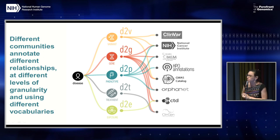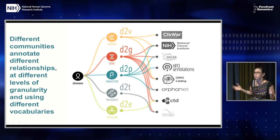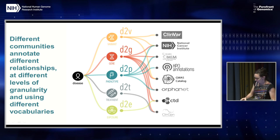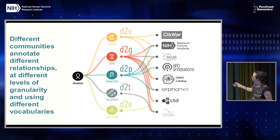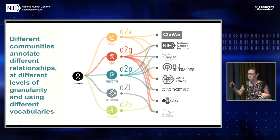One of the problems in integrating all this data is that different communities are annotating to different relationships. In the human space alone: in Monarch, we annotate diseases to phenotypes for profile matching; from OMIM we get disease to gene; from ClinVar, disease to variant; from comparative toxicogenomics, disease to environment. None of these really use the same model, but the canonical real disease model is all of these things put together. One of the big tasks is how do we help each of these groups continue their excellent curation work but do so in a way that's born interoperable.